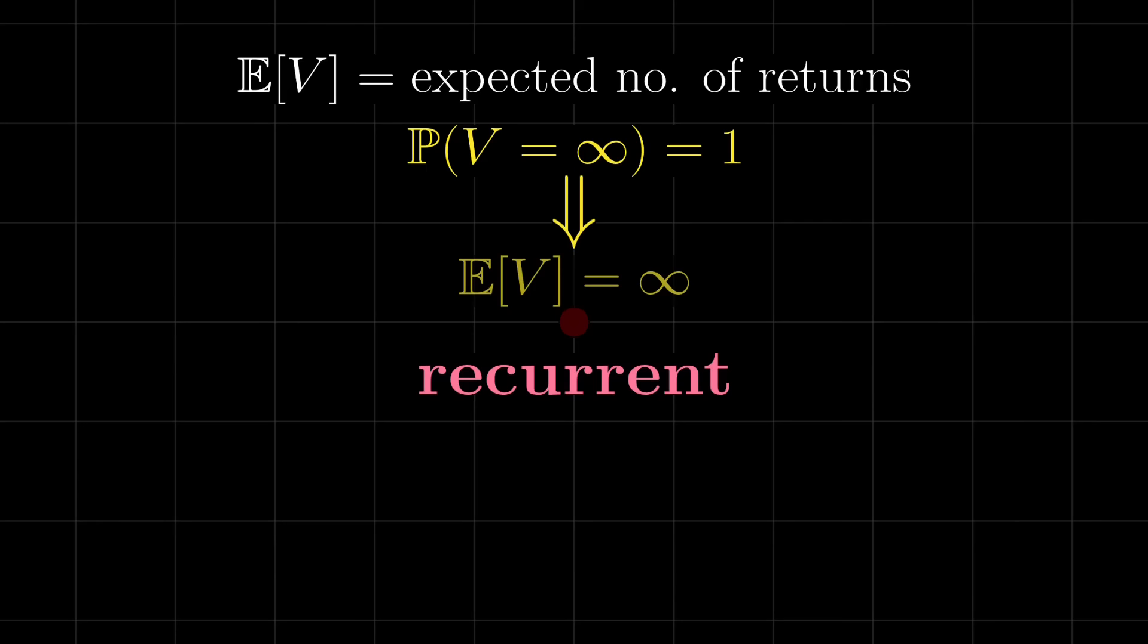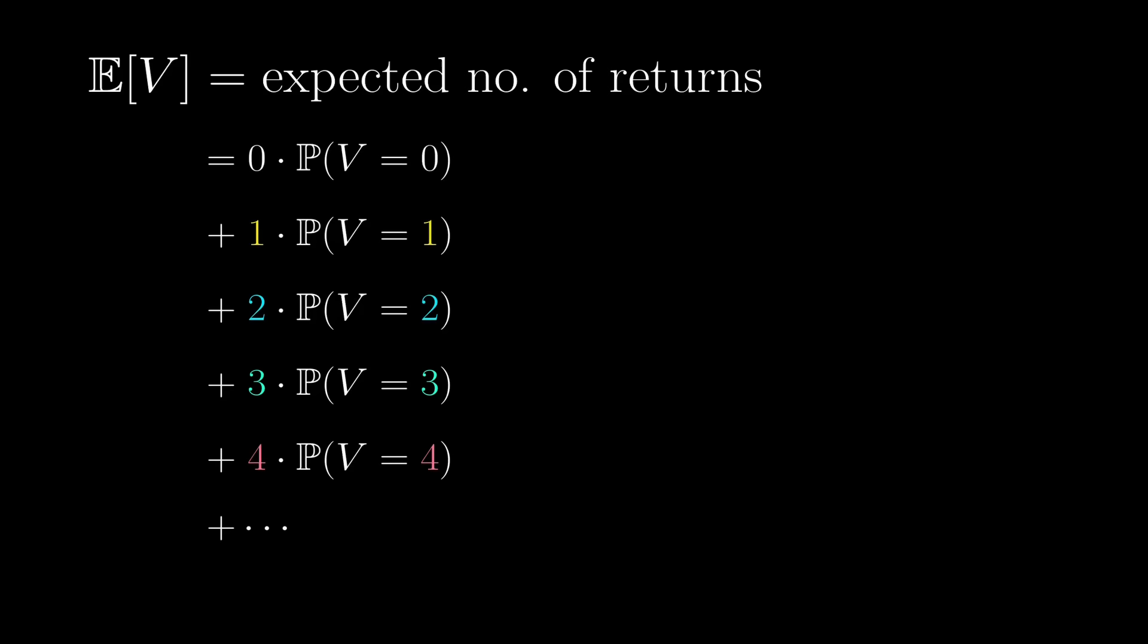What if the state is transient? Here is a very clever general trick. By definition, the expectation is 0 times the probability that V is 0, plus 1 times the probability that V is 1, and so on.